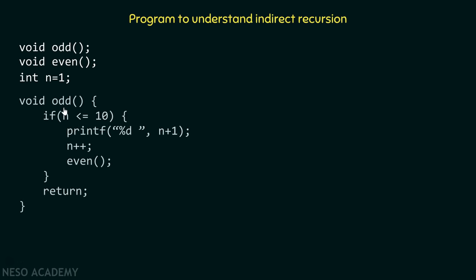Here is the definition of the function odd. Inside this function we have an if construct and then immediately after that a return statement. The if construct checks: if n is less than or equal to ten, then print n plus one on the screen. Since the odd function handles odd numbers, if we encounter number one, it will print two. After that we increment the value of n so that it becomes even, and then we call the even function to handle that number.